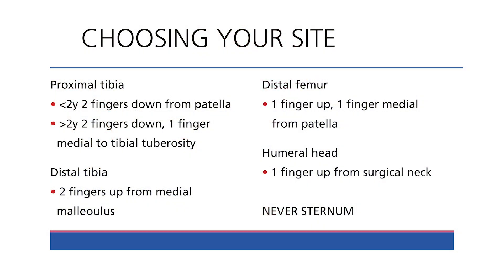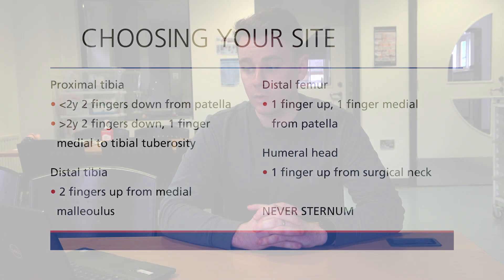Choosing your IO site depends on the clinical situation as well as the size and age of the child. The most used site is the proximal tibia, taught on courses such as APLS. Other sites include the distal tibia, distal femur, and humeral head. There needs to be some flexibility in your choice depending on the patient. Note that the EZIO should not be used for the sternum — this is clearly highlighted on the packaging. Landmarks for these sites are patient dependent.